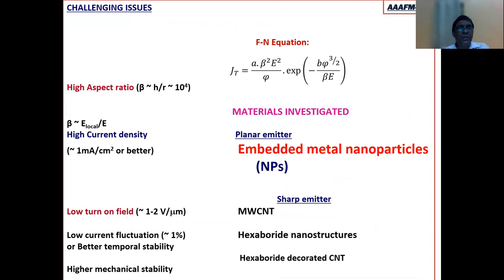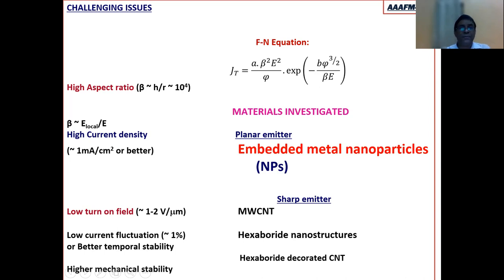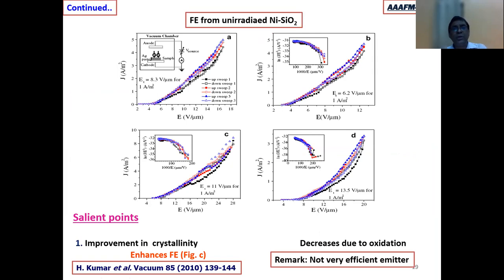There are challenging material science issues: one must achieve high current density, very low turn-on field, low current fluctuations, and high temporal stability. According to the Fowler-Nordheim equation, the field emission current density depends on two key factors: phi, the work function, and beta, the field enhancement factor. Initially, our embedded metal nanoparticles showed field emission current, but the current density was not very high. With annealing, the current density even decreases because the particles grow and the enhancement factor decreases.